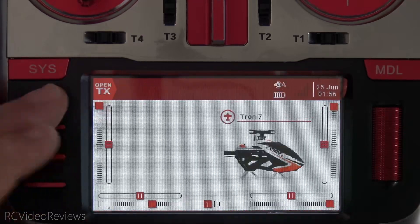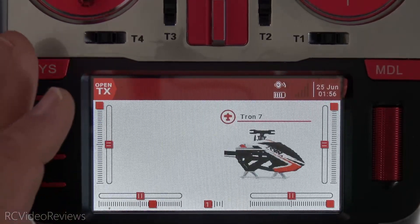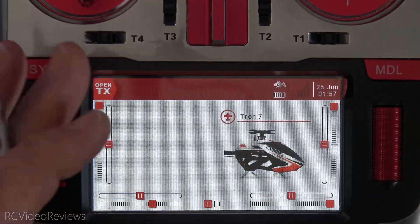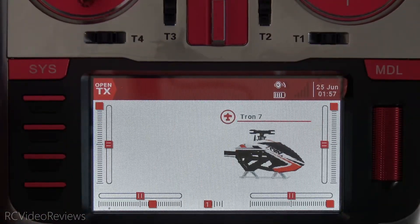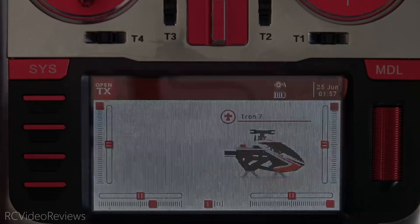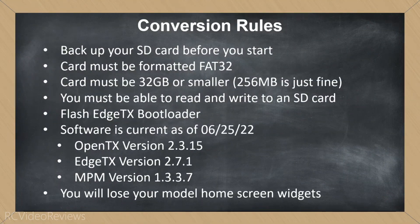Now that you've seen I've got an OpenTX radio with a couple of models and a couple of radio settings, that sets the stage for the process we're about to undertake. I'm going to switch over to a blackboard and cover some rules. The first thing you need to do is back up your SD card — you're warned, please make sure you do it. The next thing is to make sure your card is formatted as FAT32; don't use ExFAT, NTFS, or any other exotic file system.